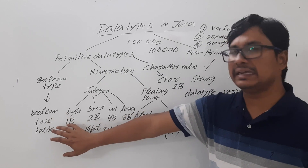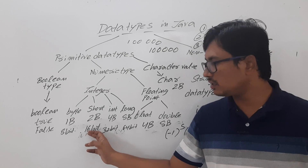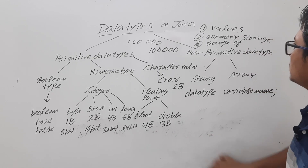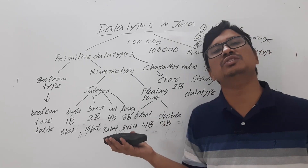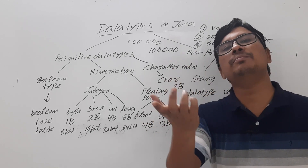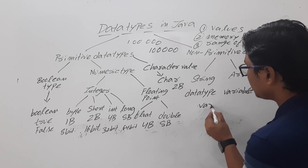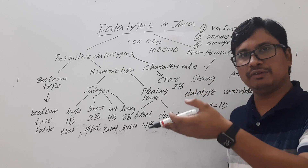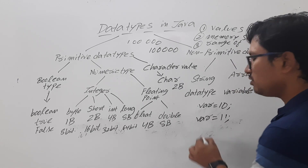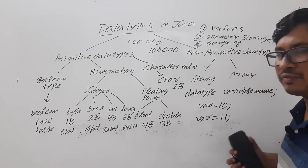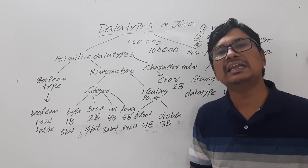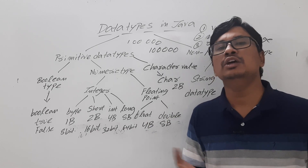Now let me discuss the range of values for byte, short, and others. For non-primitive data types: string is a collection of characters, and array is a collection of homogeneous values. The problem with variables is they can hold only one value at a particular instant of time. For example, if var equals 10 and then var is changed to 11, printing var will display 11. If you want to store more than one value, you use an array. An integer array can store a collection of integer values.